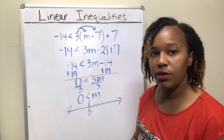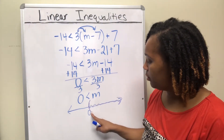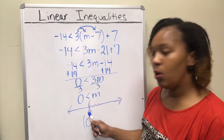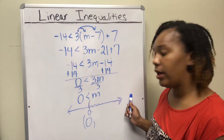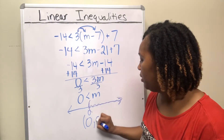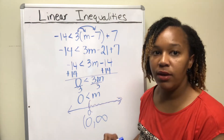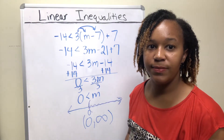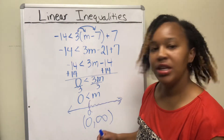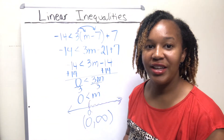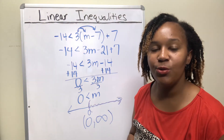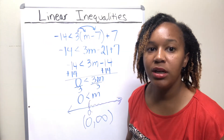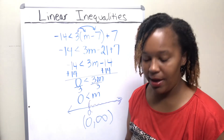In interval notation, the smallest shaded number is 0 with a parenthesis, and it goes to positive infinity with a parenthesis. In this problem, you did not have to change the direction of the inequality symbol because we never multiplied or divided by a negative number.